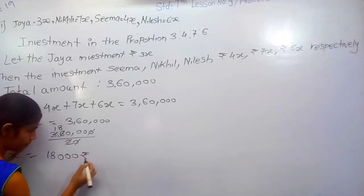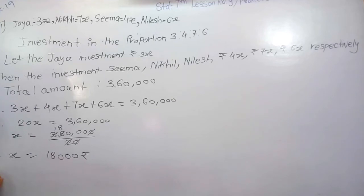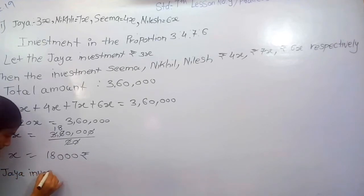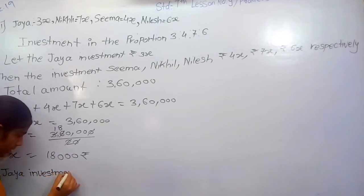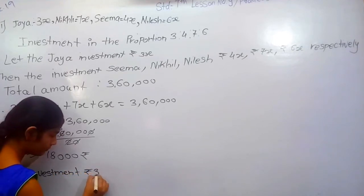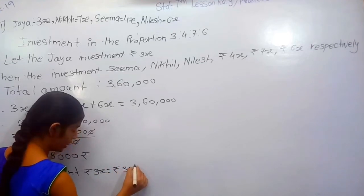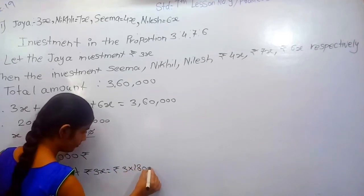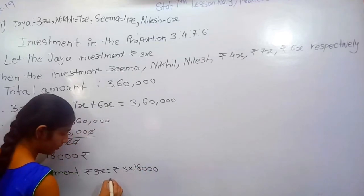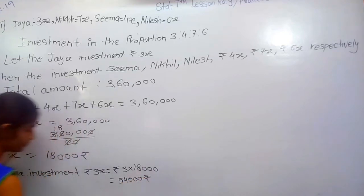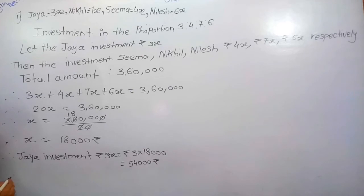Jaya's investment is Rs. 3x, which equals Rs. 3 multiplied by 15,800, giving Rs. 54,000.